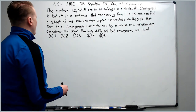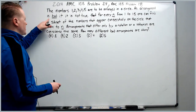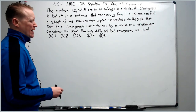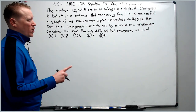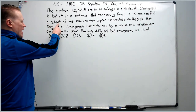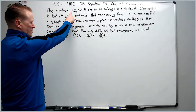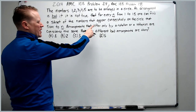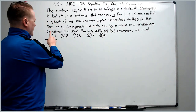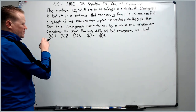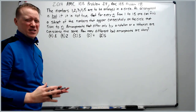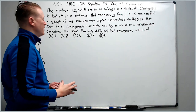The numbers 1, 2, 3, 4, and 5 are to be arranged in a circle. An arrangement is bad if it is not true that for every n from 1 to 15, one can find a subset of the numbers that appear consecutively on the circle that sum to n. Pause there, because it's kind of hard to understand what we just read.